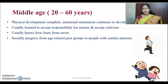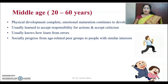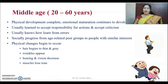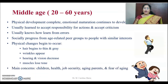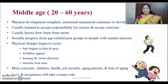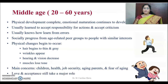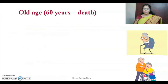In middle age, people with similar interests join together to form a group. Physical changes begin to occur: hair begins to thin and gray, wrinkles appear, hearing and vision decrease, and muscle tone is lost. They are mainly concerned about their children, their health, job security, aging parents, and fear of aging. Love and acceptance still play a major role in this middle age stage.